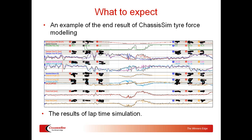To set the scene, what I'm going to show you is the end result of using the ChassisSim tyre force modeling toolbox. What we've got here is a comparison of actual versus simulated data. We've got speed, throttle, front dampers, rear dampers, steer, lateral and inline G, front and rear roll. Actual is colored, simulated is black. Now, the tyre model used for this particular car had never seen a tyre test rig.